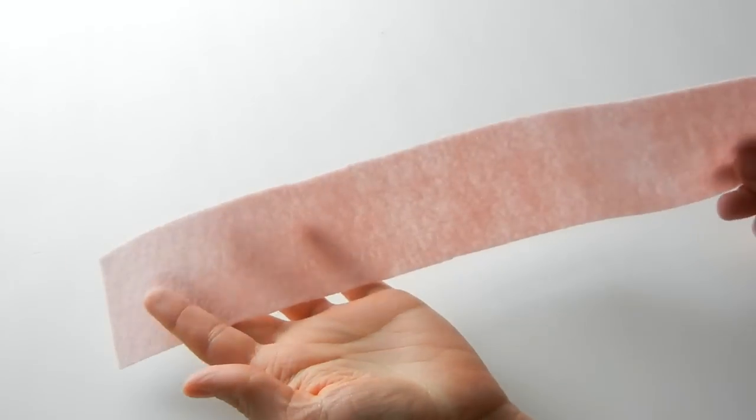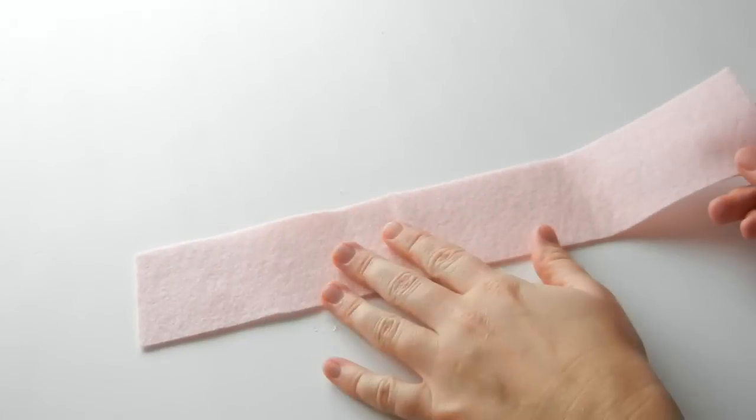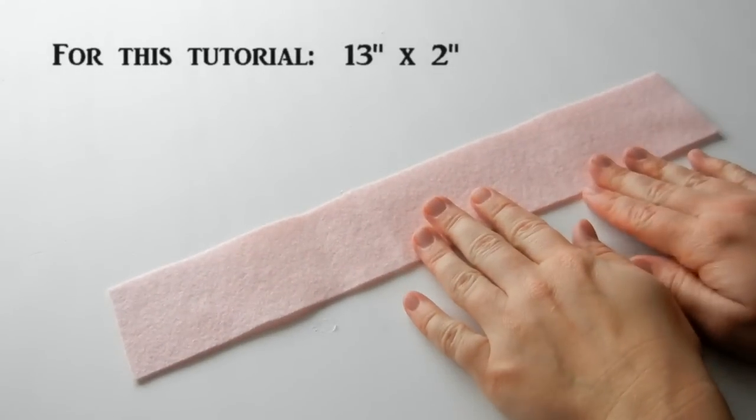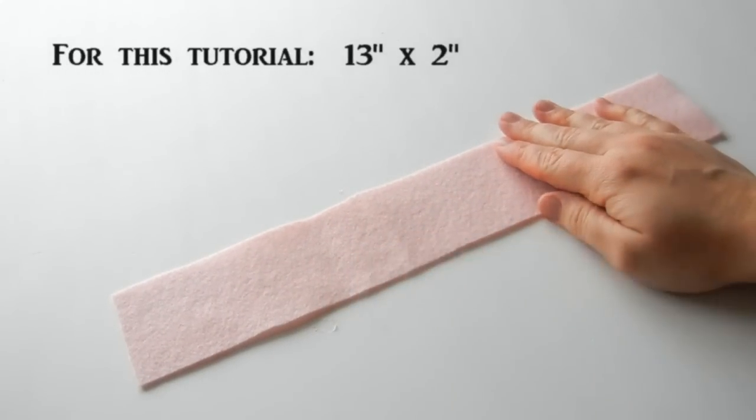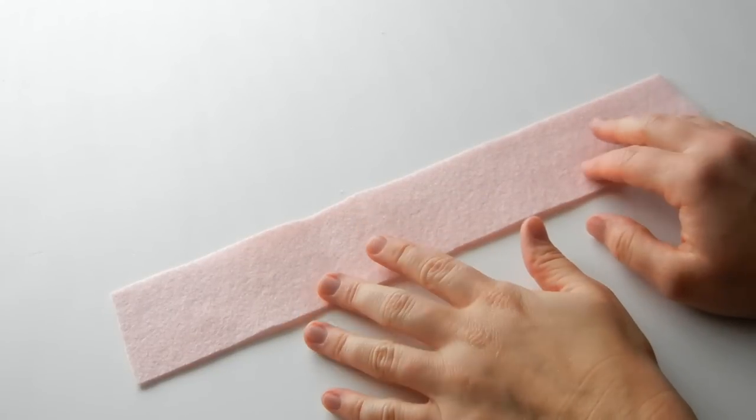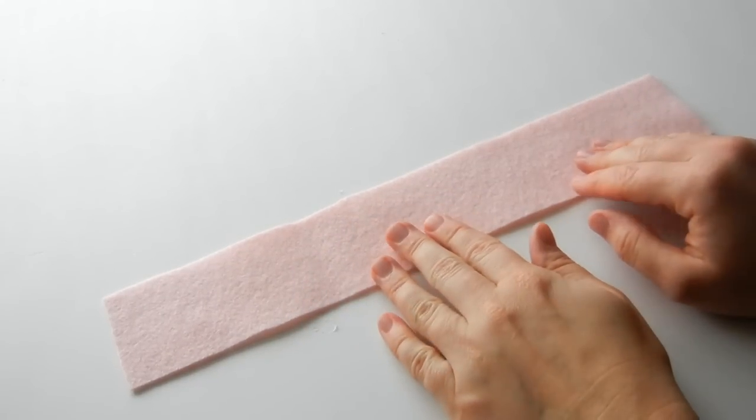Take your felt by the yard and cut a strip. This strip is about 13 inches by 2 inches. The longer the strip, the bigger the flower. This one is going to be kind of big.